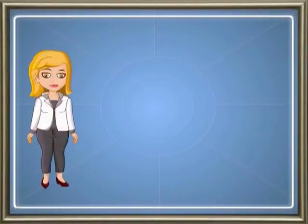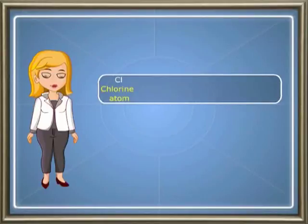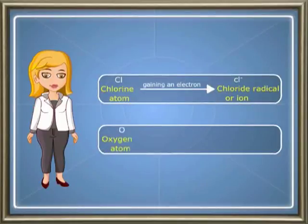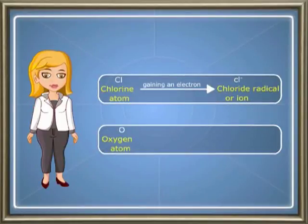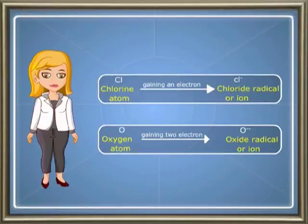Radicals are also formed by the gaining of electrons. These are described as electro negative and are called acidic radicals or anions. For example, chlorine atom on gaining an electron becomes chloride radical or ion. Oxygen atom on gaining two electrons becomes oxide radical or ion.